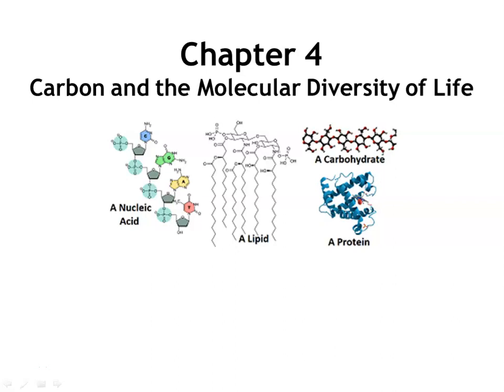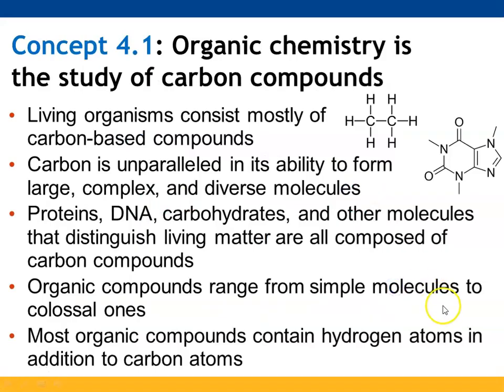Chapter 4 is going to focus on carbon and its role with living things. Organic chemistry is known as the study of compounds that contain carbon, and living organisms are primarily composed of these carbon-based compounds. Carbon is able to make lots of different structures and can be part of lots of different types of molecules — your four macromolecules: proteins, nucleic acids, carbohydrates, and lipids. Being composed of compounds made of carbon is one of the characteristics of living things.